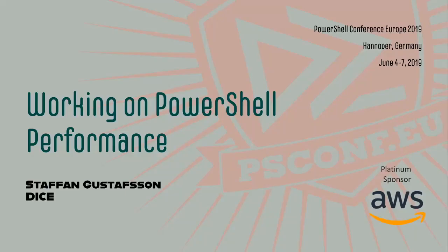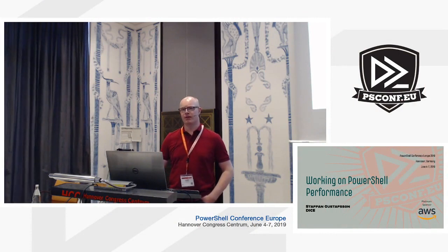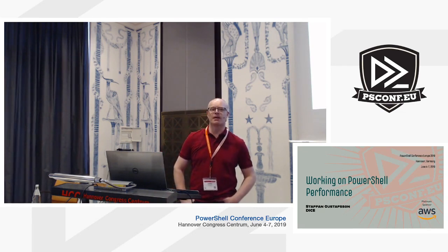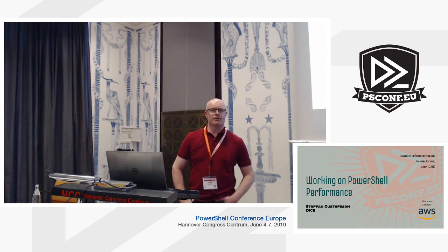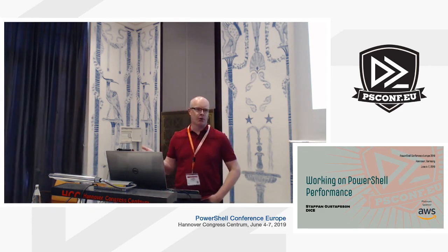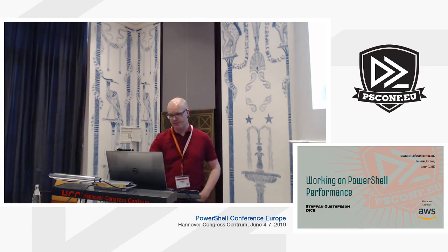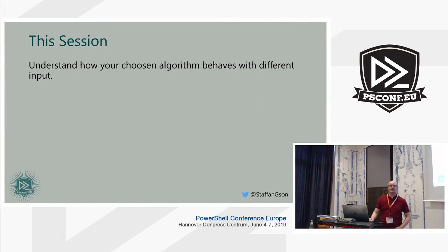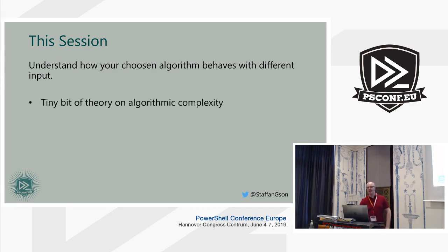Hi everybody, my name is Staffan and today I'm going to talk about something I did last autumn. I ran into issues with Group-Object that I had seen previously, and I set out to try to fix them. This is a description of the problems I ran into and the steps I took to fix it. The algorithm used by Group-Object was quadratic in complexity, and we're going to talk about what that means — there will be a bit of theory on algorithmic complexity.